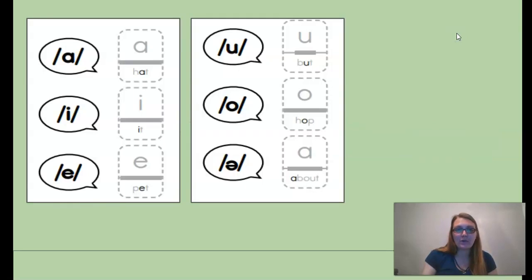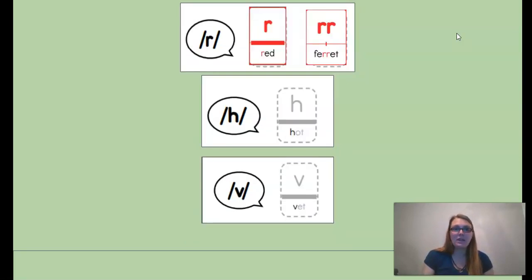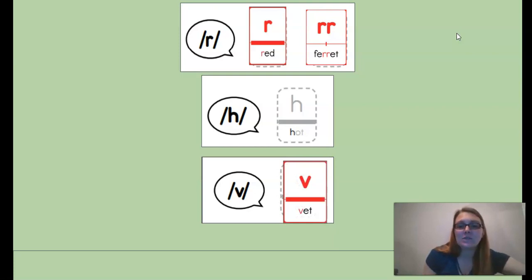Our letter sound review. All of our sounds. We have A for A, I spelled I, A spelled E, U spelled U, and A spelled with an O. Those five sounds in green are our vowel sounds so far. Now we have the single and double R, the V sound with a single V, and the H sound with a single H.